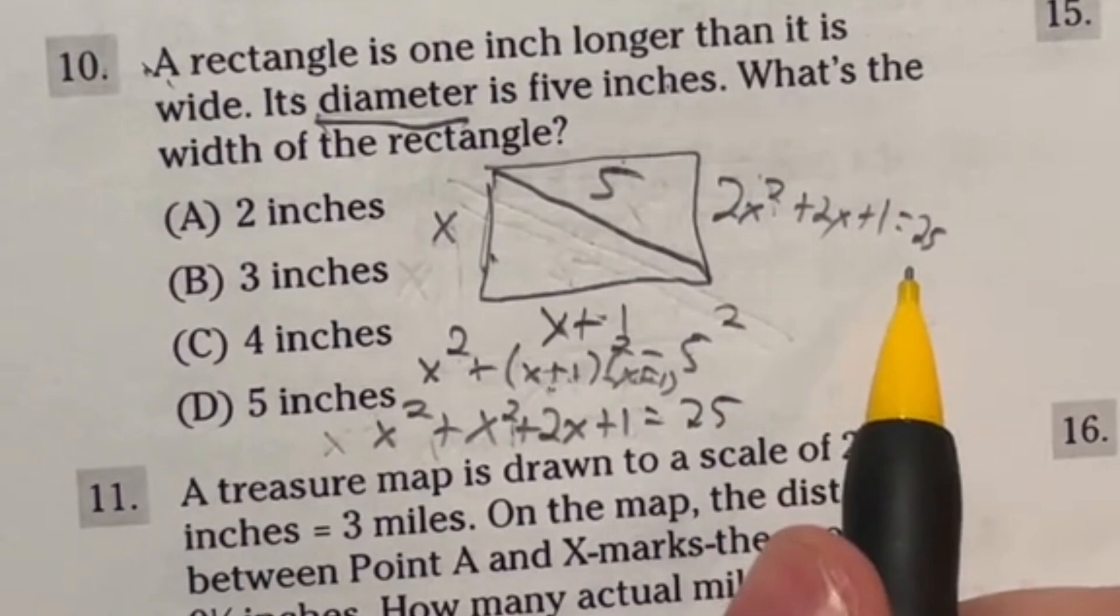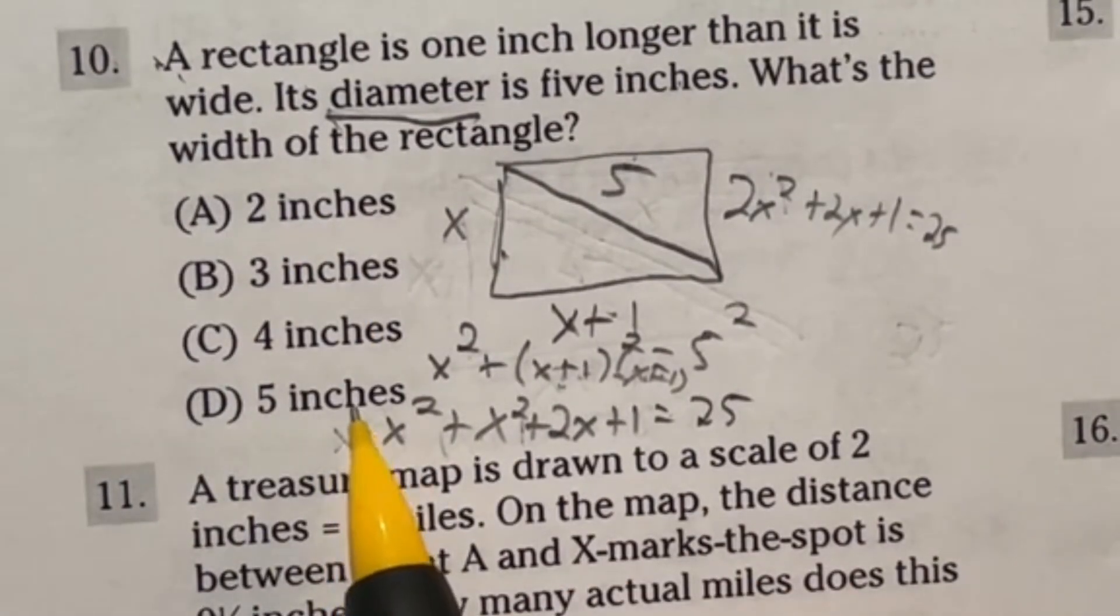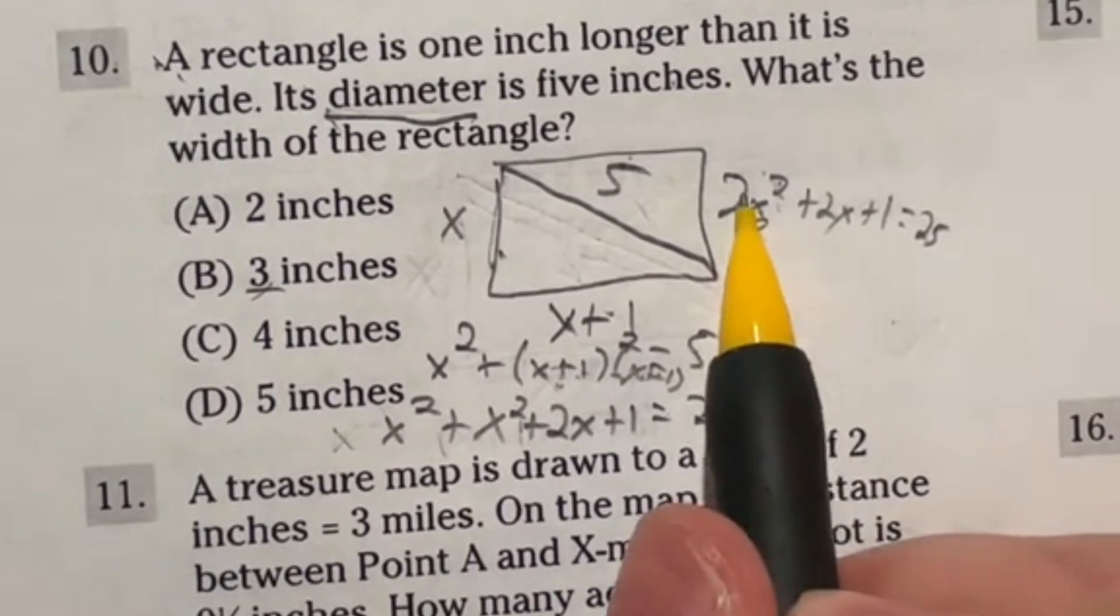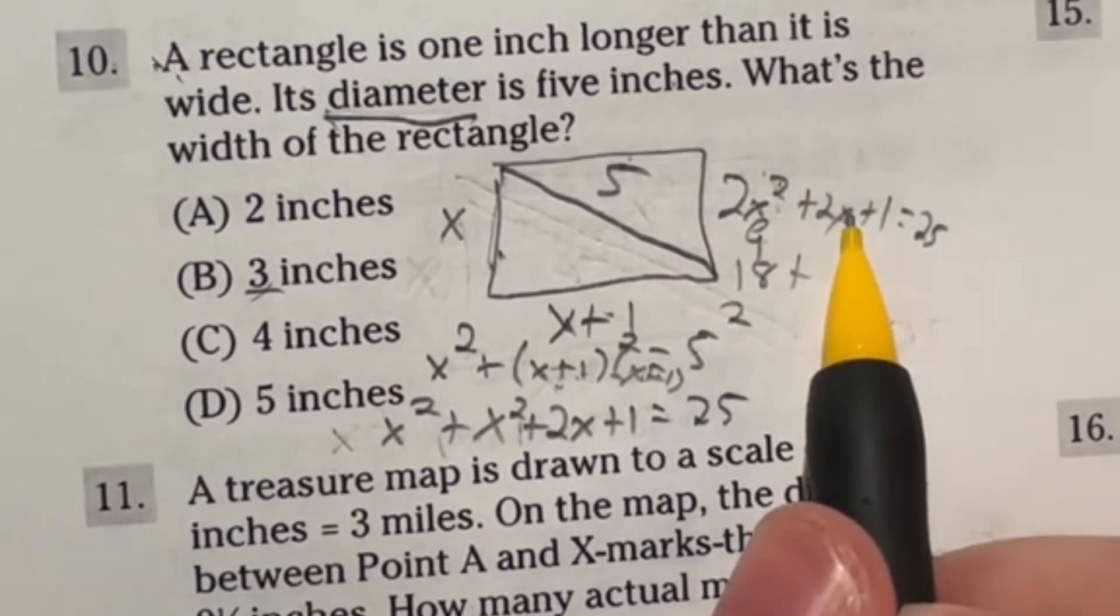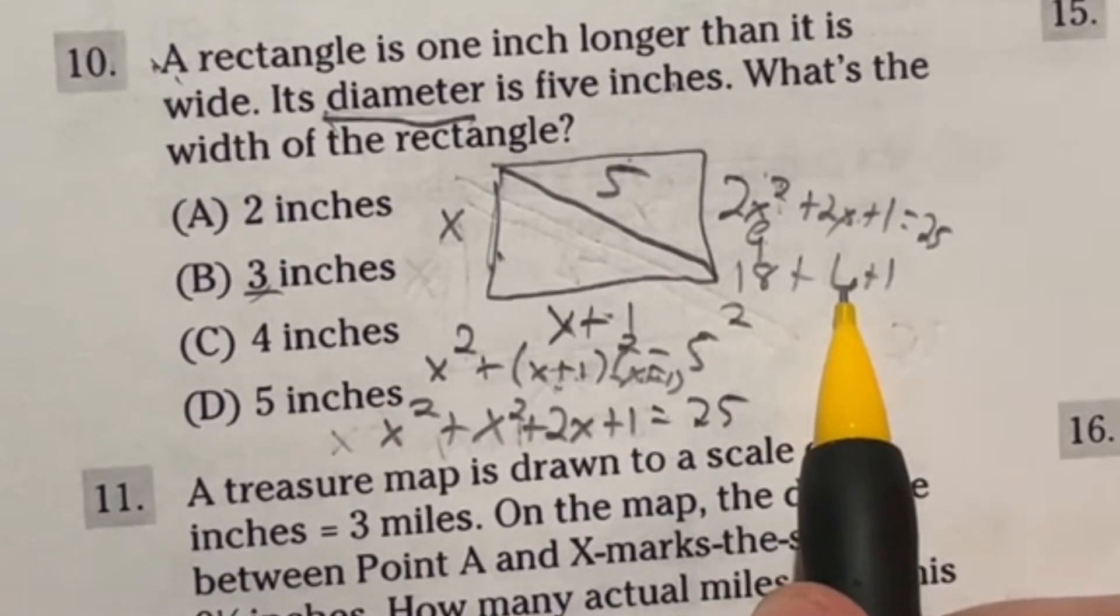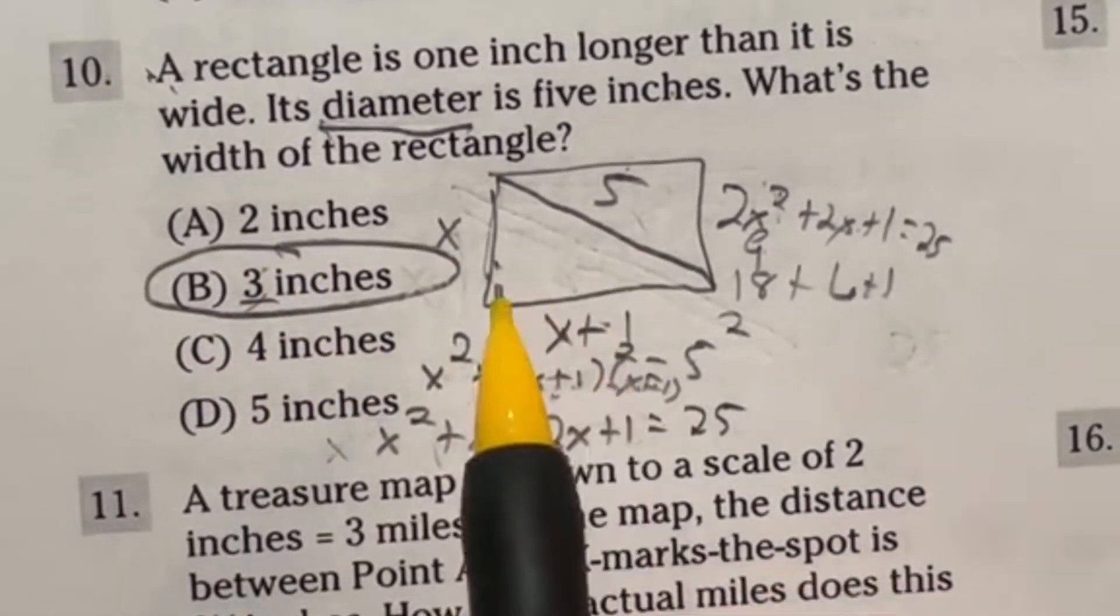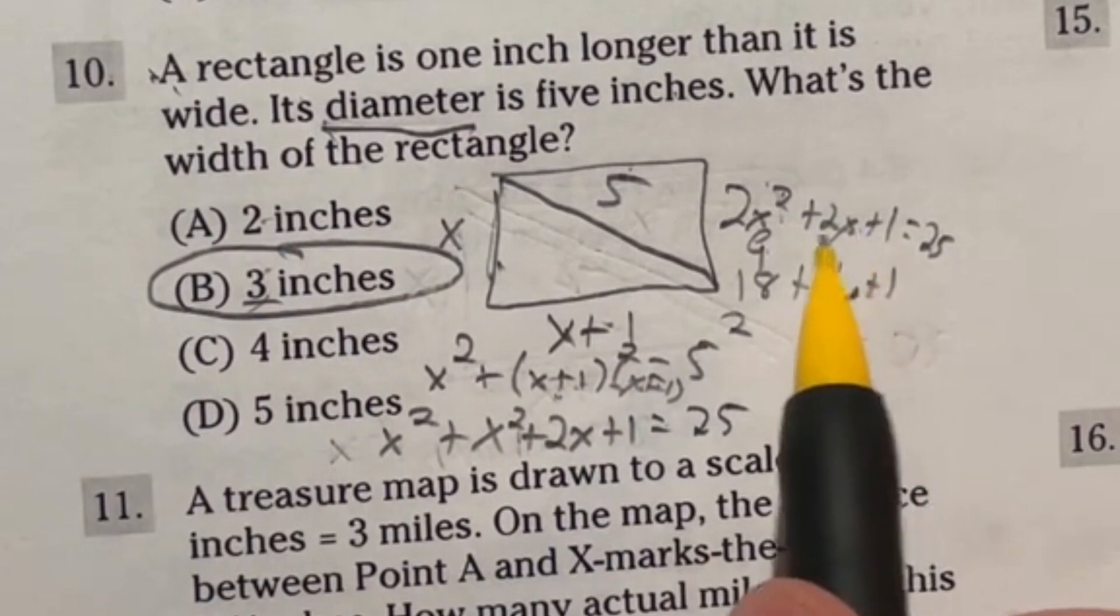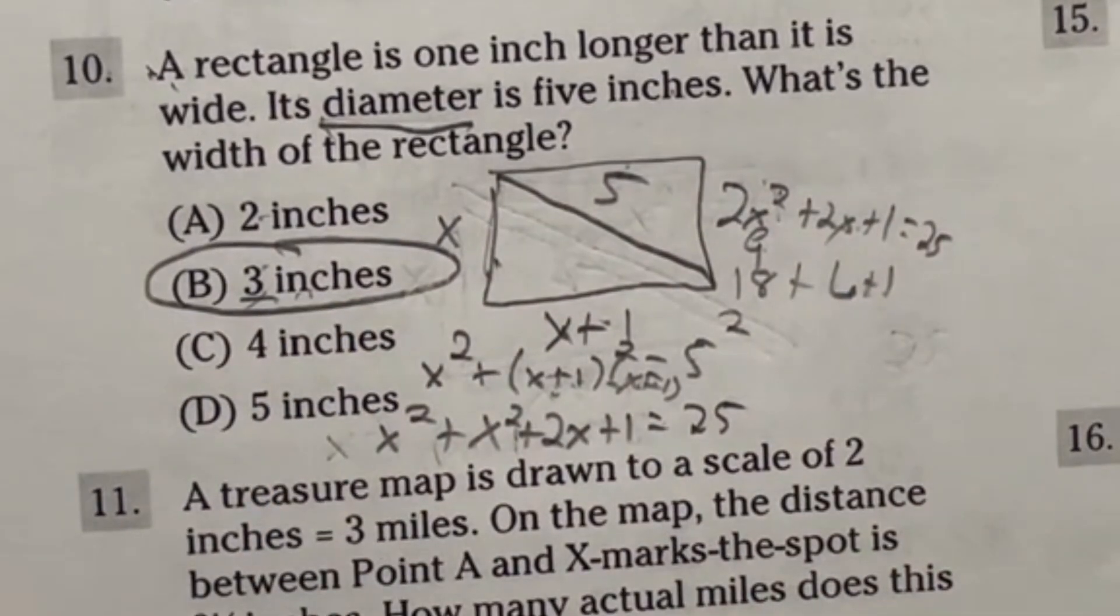Let's combine like terms. X squared and X squared gives two X squared, plus two X, plus one equals 25. From here, I think it's fastest to just plug this in. Let's start with three. Three squared is nine. Nine times two is 18. Plus three times two is six plus one. Does that give me 25? 18 plus six is 24 plus one. Great. B, three inches is the answer. I really do think your best choice here is to try plugging these in because otherwise you'd have to do factoring and all that.